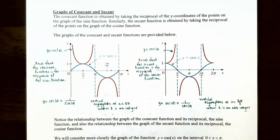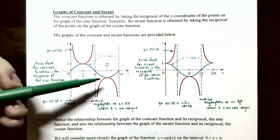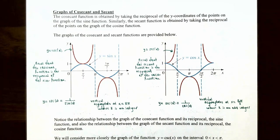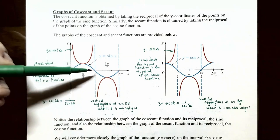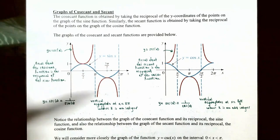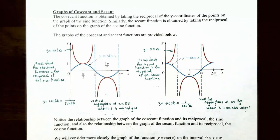The highest y-value the sine function obtains is 1 and the lowest y-value is negative 1. The graph of the sine function has x-intercepts at x equals 0, x equals π, and x equals 2π.